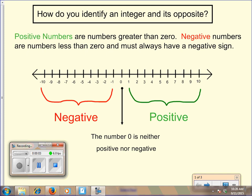Today we are going to be talking about how we can identify integers and their opposites. As you can see, on a number line we have both positive and negative numbers.